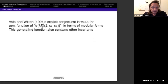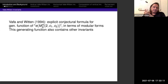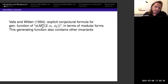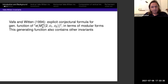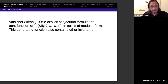Vafa and Witten in 1994, in their famous paper 'Strong Coupling Test of S-duality', gave an explicit conjectural formula for the generating function of the Euler numbers of moduli spaces in rank 2, in terms of modular forms. This is not quite true — it's maybe not precisely the Euler number, and it is more general. This generating function also computes other invariants, now called the Vafa-Witten invariants.